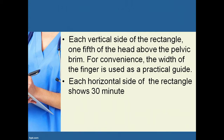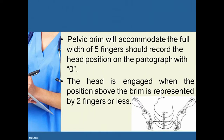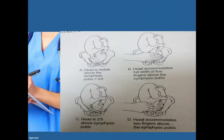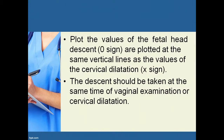To plot fetal head descent, use the space from 5 to 0 in the same area as cervical dilatation. Each vertical side of the rectangle represents one-fifth of the head above the pelvic brim; the width of a finger is used as a practical guide. Each horizontal side shows 30 minutes. The pelvic brim accommodates the full width of five fingers; when position above the brim is two fingers or less, the head is engaged. Values of fetal head descent are marked 'O' on the same vertical line as cervical dilatation.